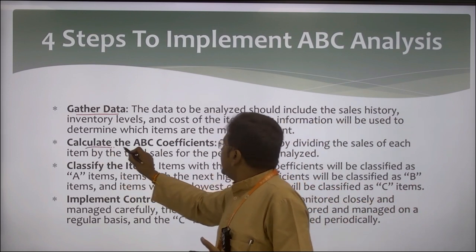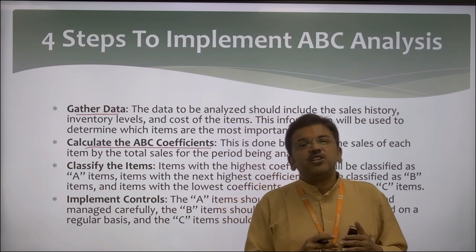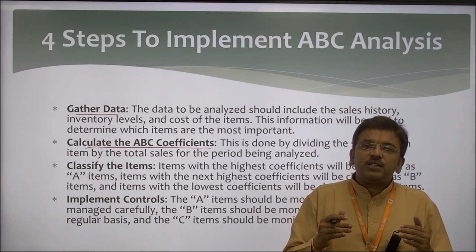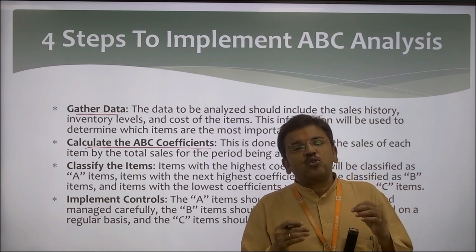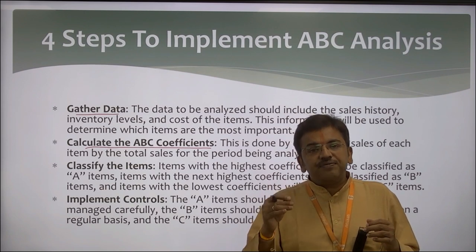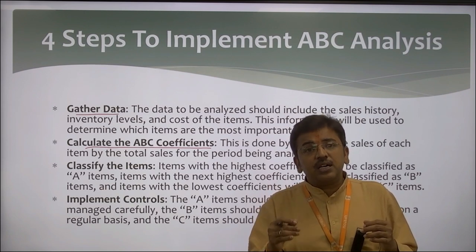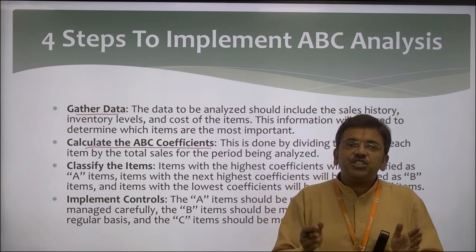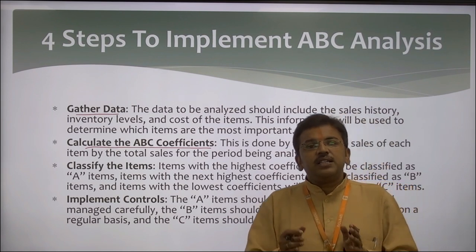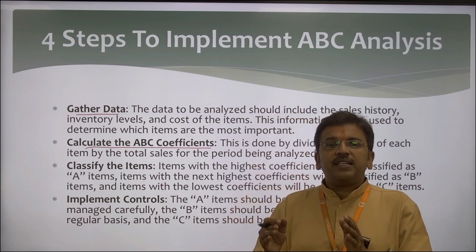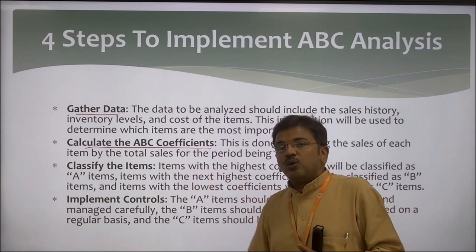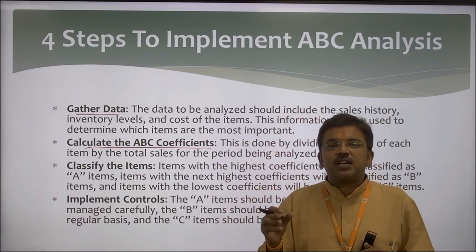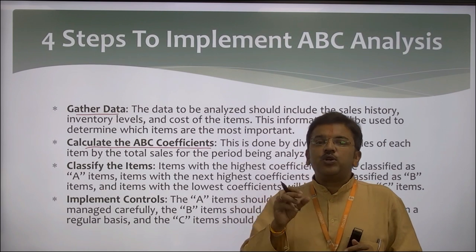The second step is to calculate the ABC coefficient. In ABC analysis, we consider both the quantity and the price of raw material. We keep data organized by price and by quantity. The more the quantity, the more attention that product requires; the less the quantity, the less concentration is required from management. The second step is placing raw material into different categories — whether it falls into A, B, or C category.